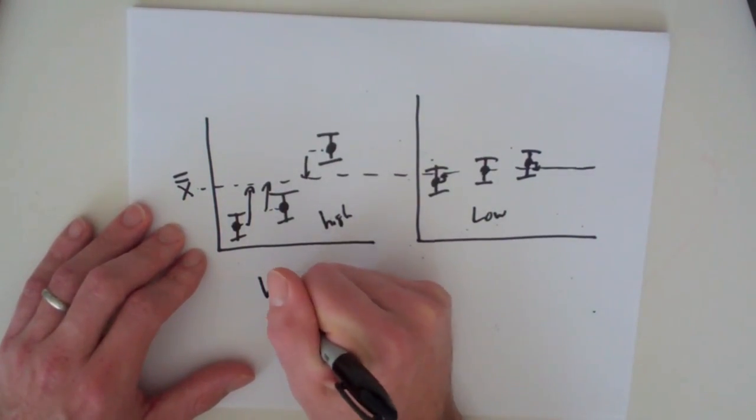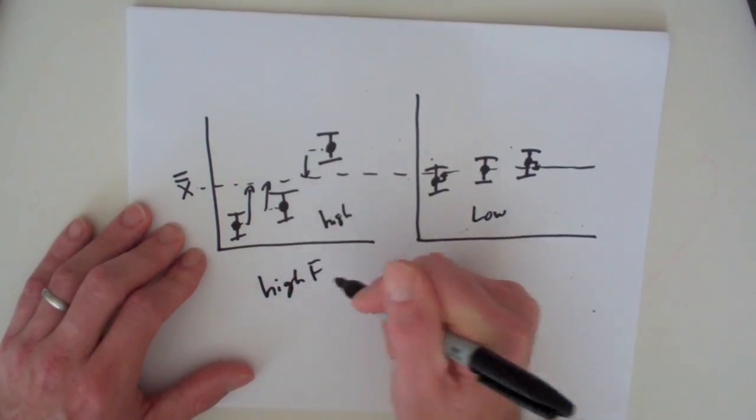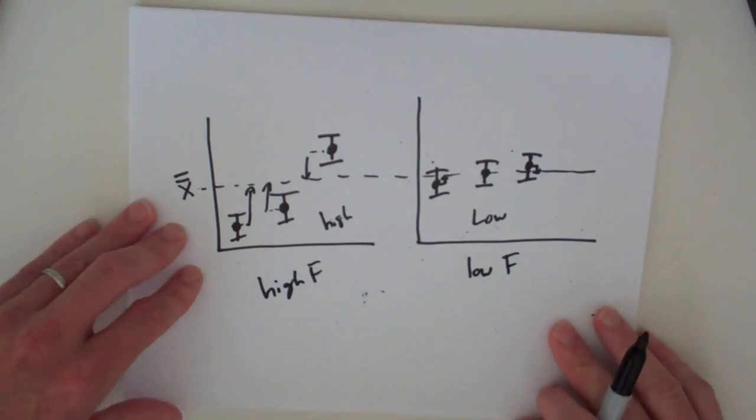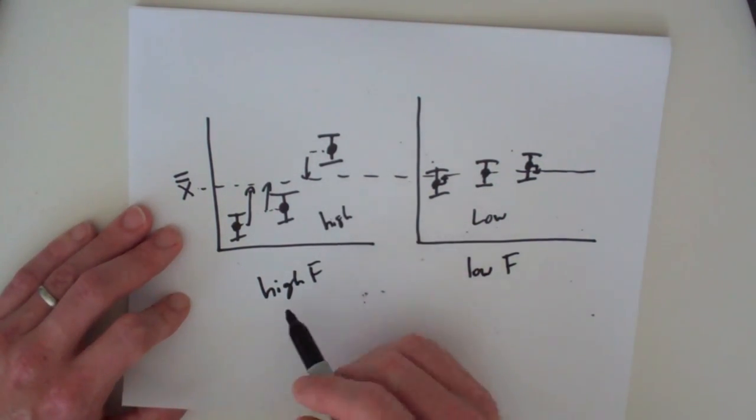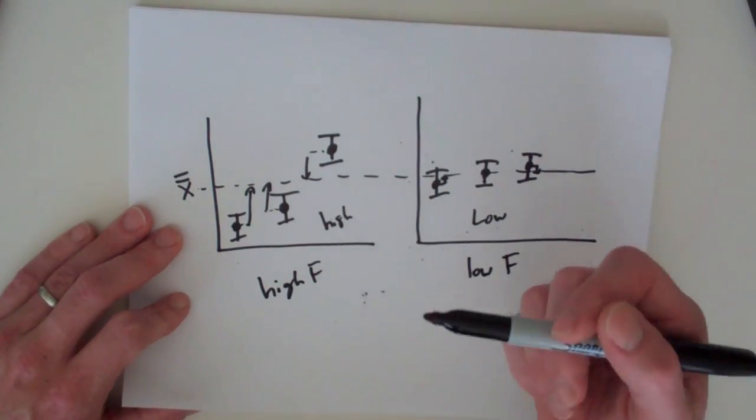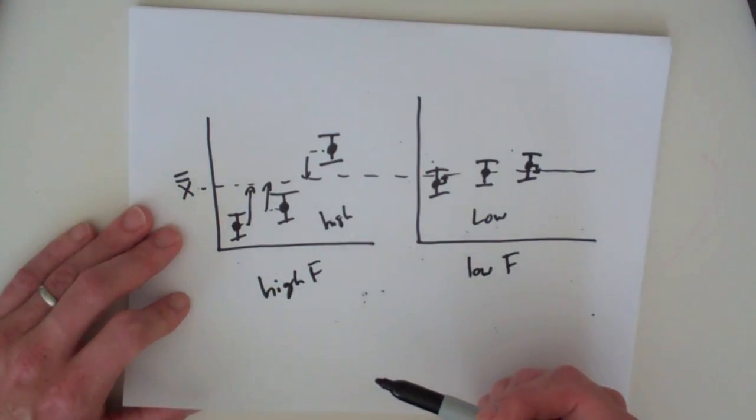That means this is going to have a high F relative to this circumstance. That's the numerator. A high F, in this case, is going to be driven by a high among group variation, the numerator in the equation for F.